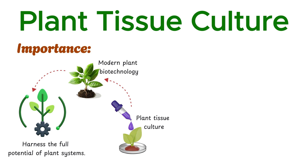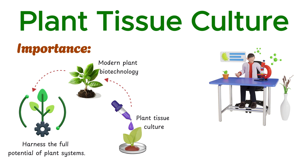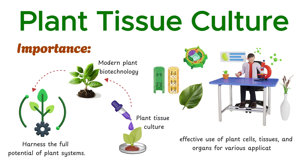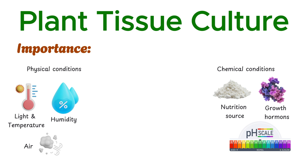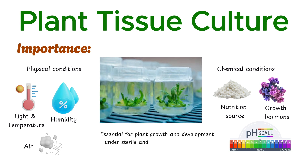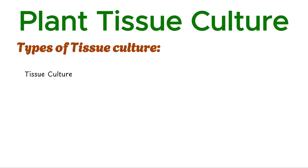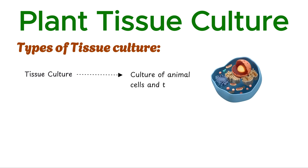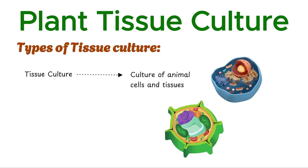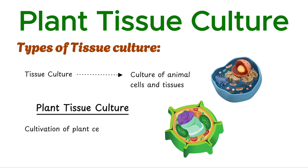By mastering these techniques, scientists gain critical insights into plant biology, enabling the effective use of plant cells, tissues, and organs for various applications. This method reveals the physical and chemical conditions essential for plant growth and development under sterile and controlled environments. Tissue culture is a broad term generally associated with the culture of animal cells and tissues; however, when it comes to plants, the specialized term plant tissue culture is used to describe the cultivation of plant cells, tissues, or organs in a controlled environment.